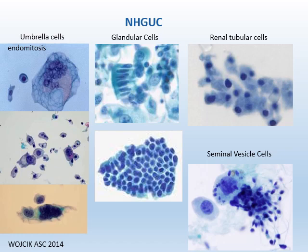Umbrella cells can be mono-, bi-, or multinucleated. Cytoplasm is dense, thick, or vacuolated. Cell membrane is sharply demarcated, generally with one flat edge. The multinucleation is called endomitosis, caused by nuclear division without cytoplasmic division. Some umbrella cells can present as smaller cells with degenerated pyknotic nuclei, mimicking atypical cells.